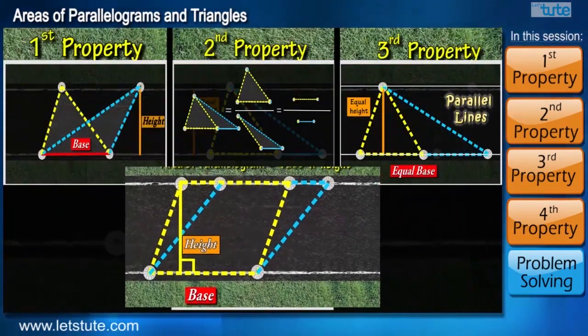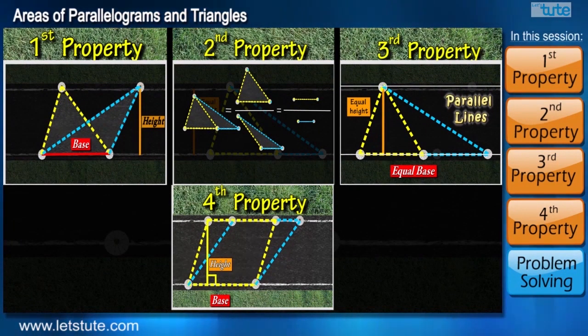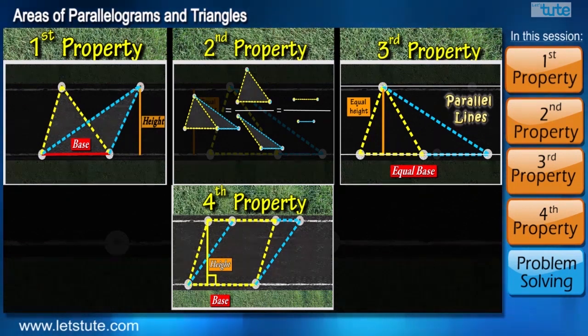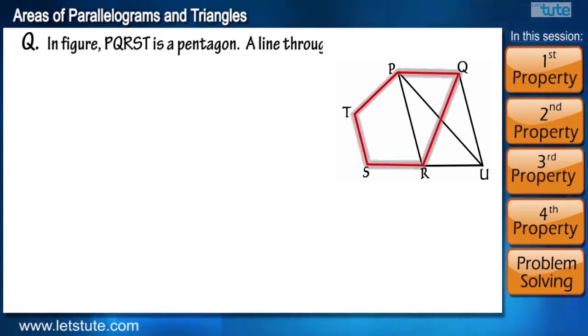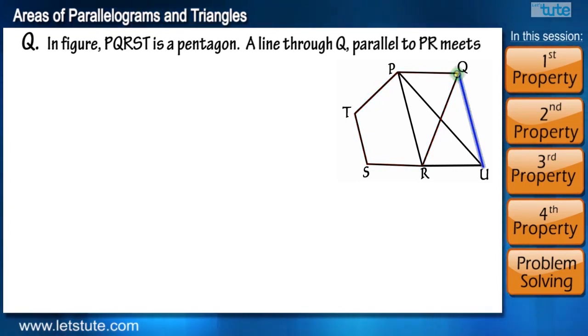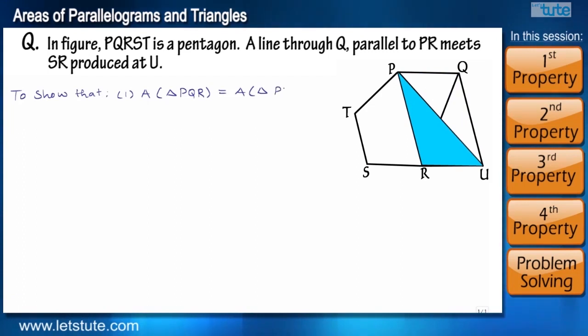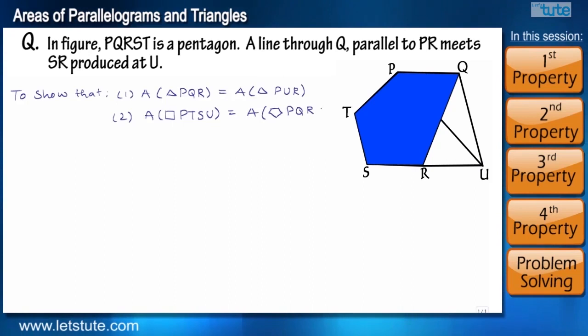Wasn't this session interesting? We have learnt a few important properties about triangles and parallelograms. But where are we going to use these properties? Let's have a look at one problem which we will solve using these properties. In the given figure PQRST is a pentagon. A line through Q parallel to PR meets SR produced at U. We have to show that area of triangle PQR is equal to area of triangle PUR and area of quadrilateral PTSU is equal to area of pentagon PQRST.